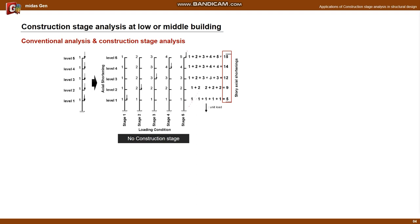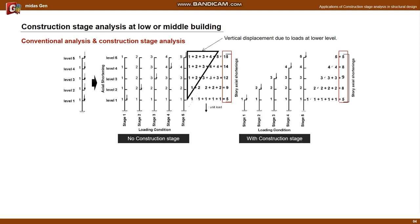The same analysis can be done for stages 3 to 5. Finally, the deformations can be combined. From level 1, deformations of 5, 9, 12, 14, and 15 occur. The triangular portion can be distinguished as the deformation caused by the deformation of the lower level. On the right is the case considering the construction stage. Since only the deformation due to the force acting at each level occurs, the deformations from levels 1 to 5 are 5, 8, 9, 8, and 5.